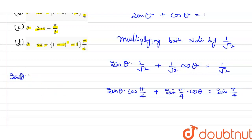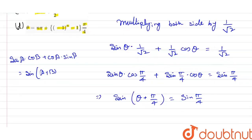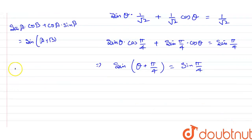This formula is sin a into cos b plus cos a into sin b, which equals sin(a plus b). So this becomes sin(theta plus pi by 4) equals sin(pi by 4). Now the general solution is sin theta equal to sin alpha, so theta equals n pi plus minus 1 power n into alpha.